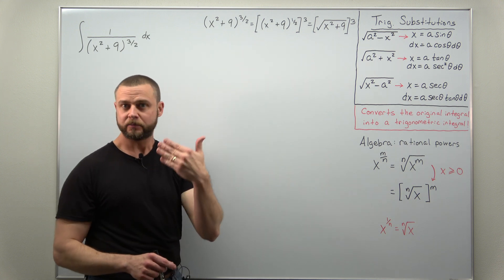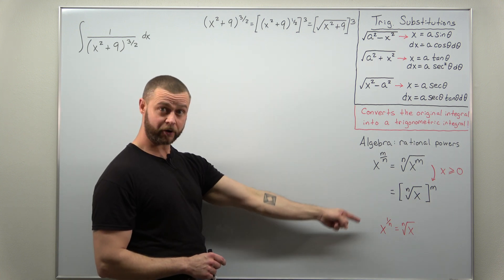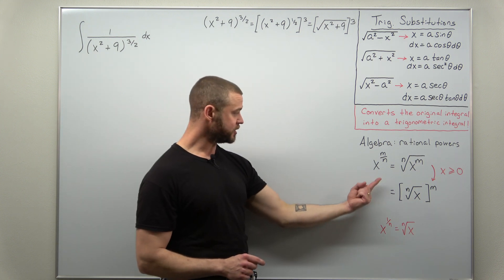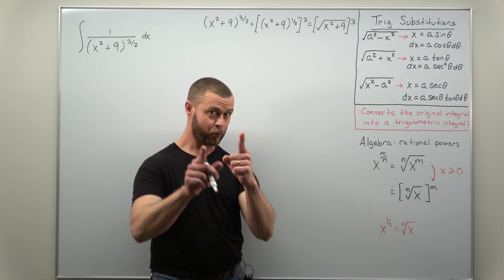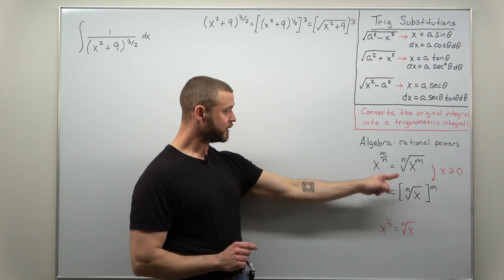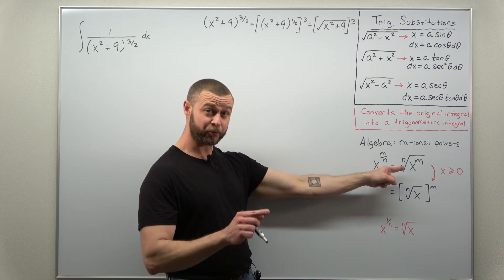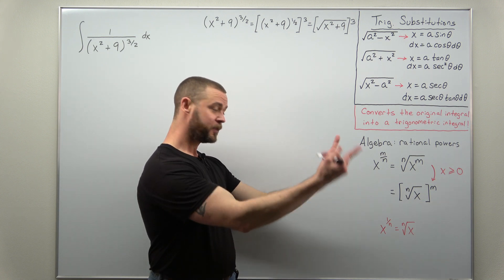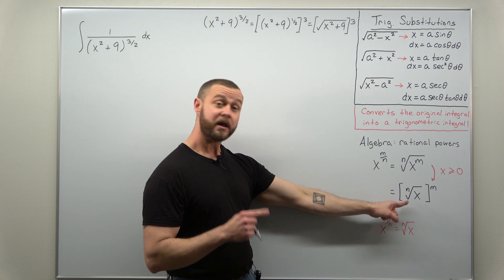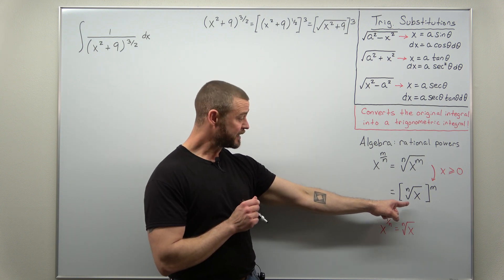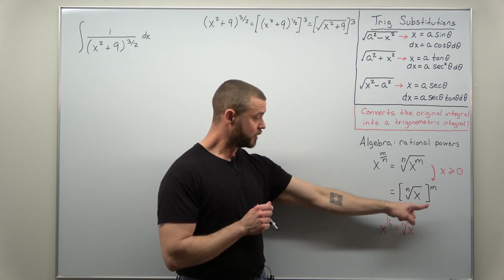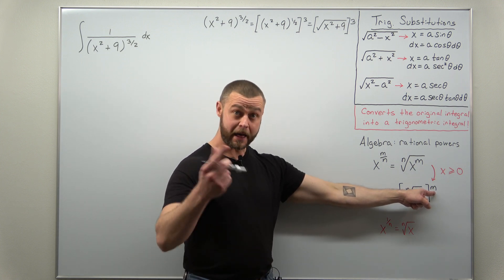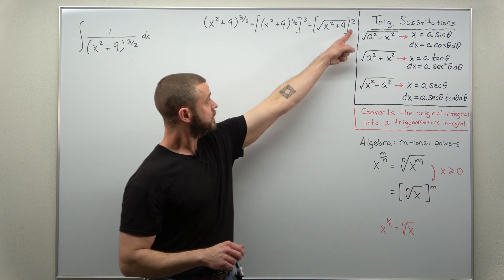All the technical rules for rational powers from algebra: x raised to a fractional power m/n can be thought of as the nth root of x to the m. As long as x is non-negative, you can switch the order and equivalently think of that as the nth root of x, all raised to the m power. That is what we're using here, where the outer power is 3.